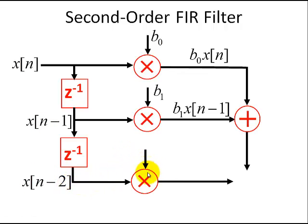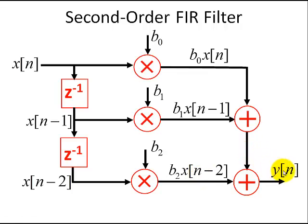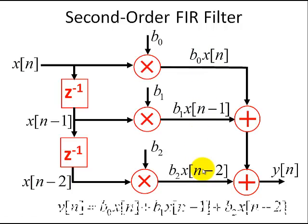And once again, we'll multiply this output from this unit delay, multiply it by B2, and the output from this scalar multiplier is B2x[n-2], and we're going to add it again. So the output is y[n], which results from adding up all these three inputs.